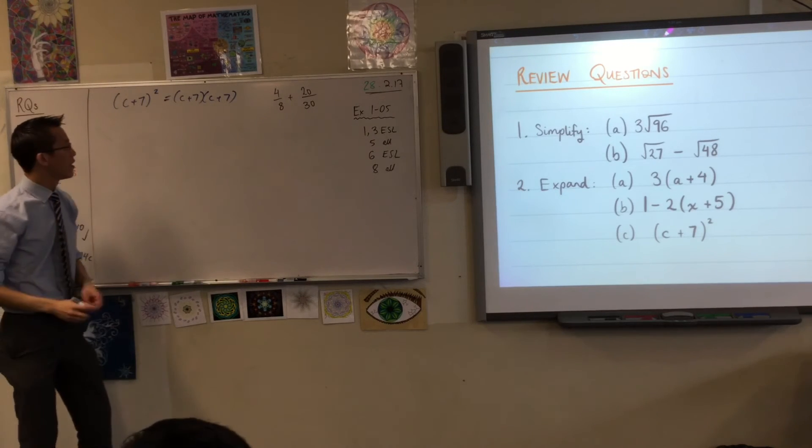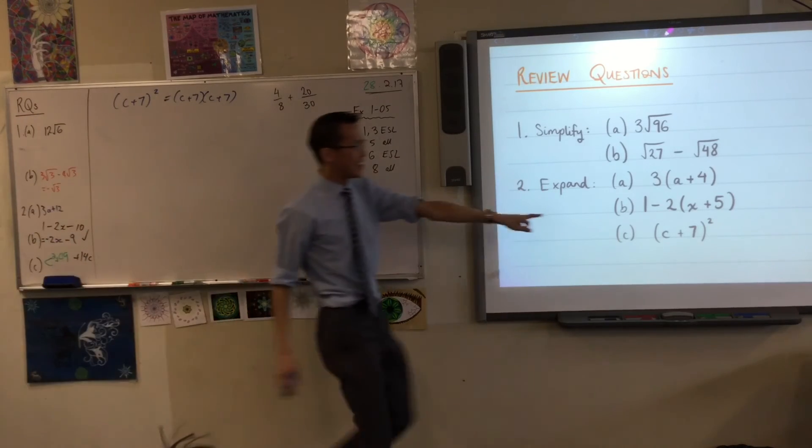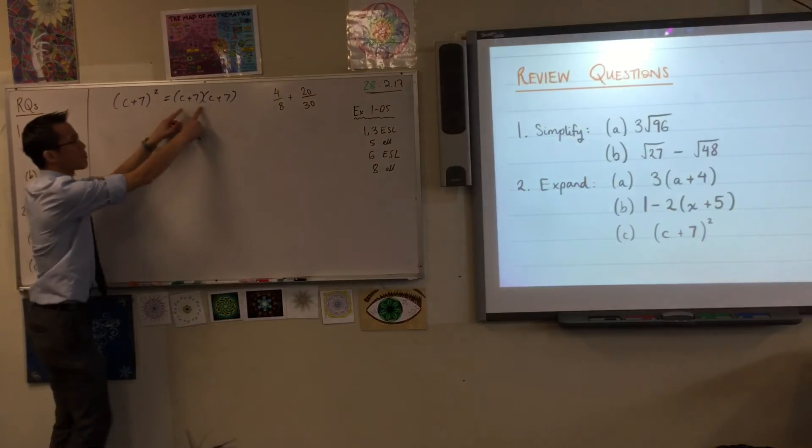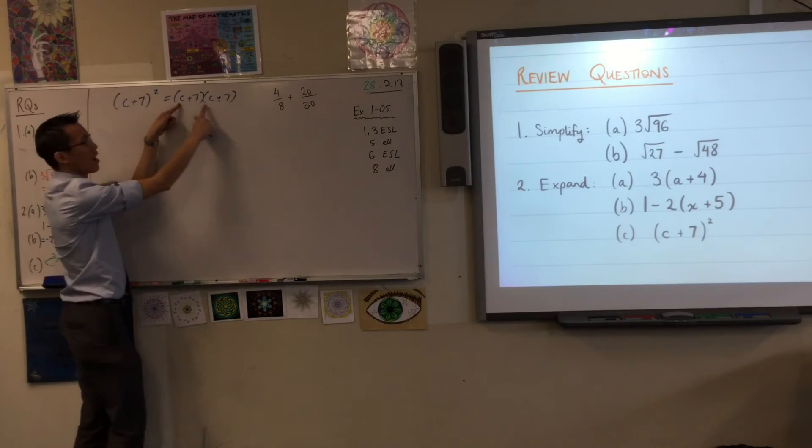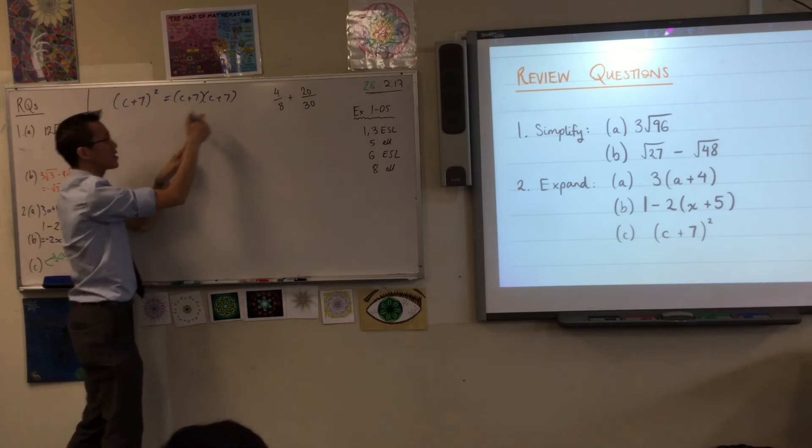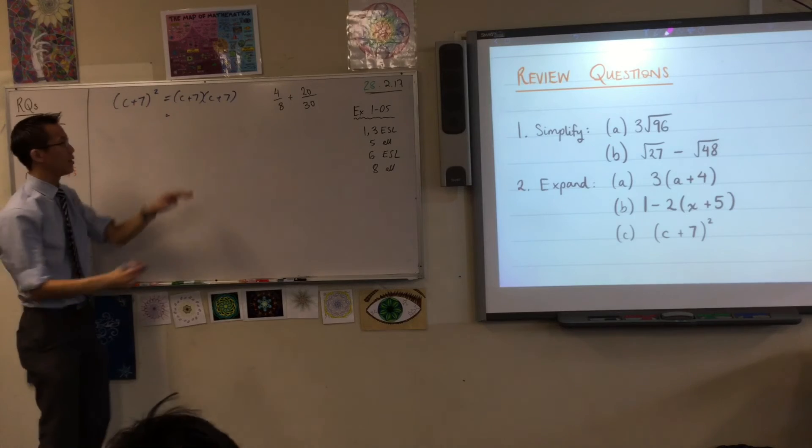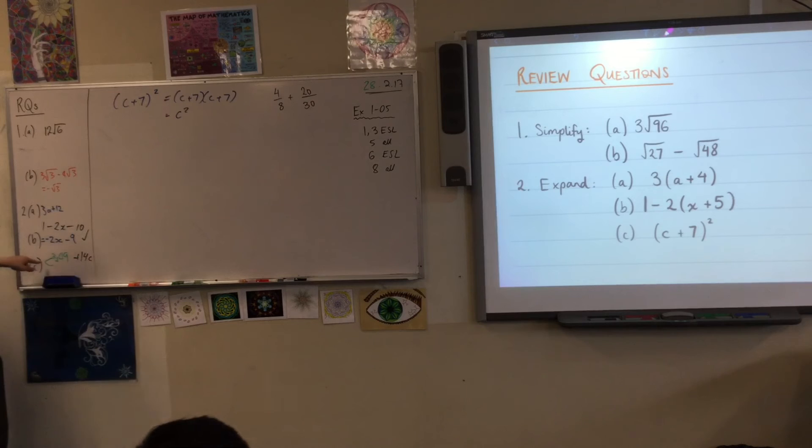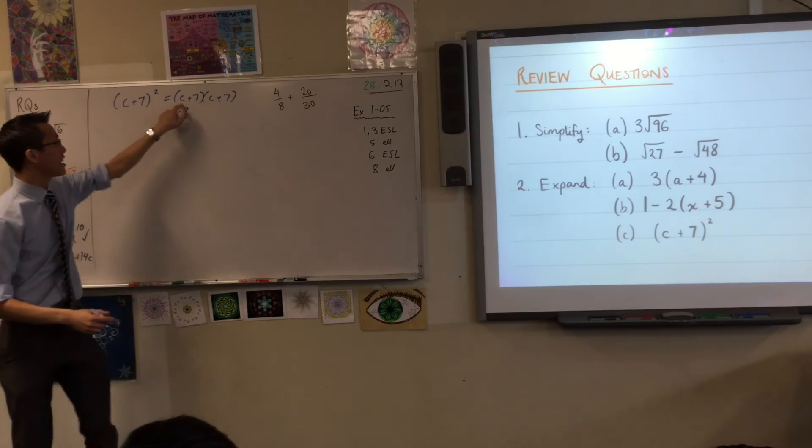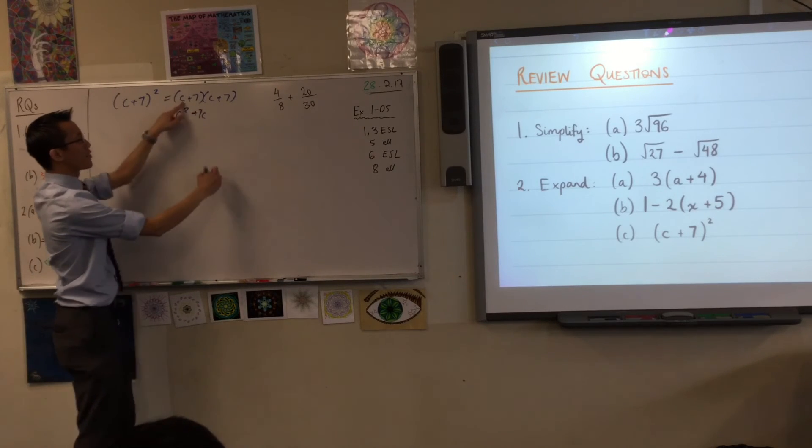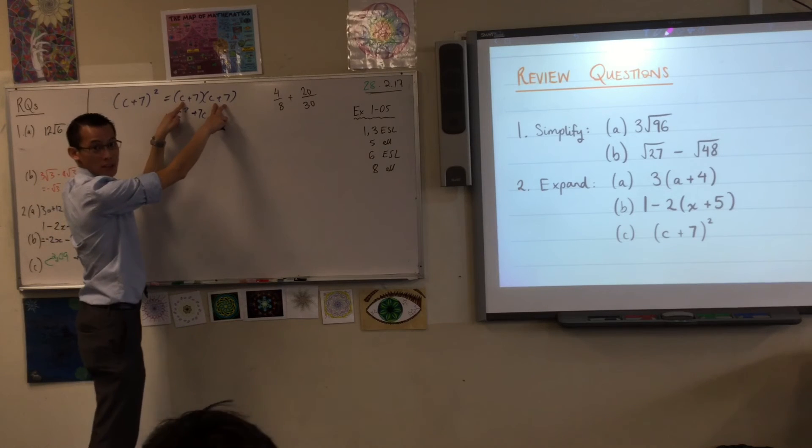Now, what you do with this is just like what you did with this. If you've got everything in the brackets, for example, this C applies to everything in here, but this 7 also applies to everything in here. So, if I just go term by term, C times C, which is exactly right. What else have we got here? C times 7, okay? So, I've done this one against both of those. So far, so good.